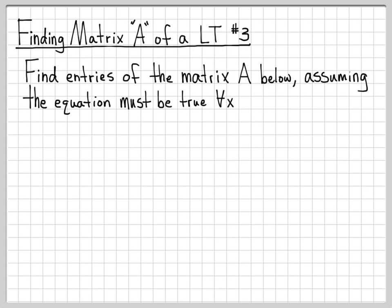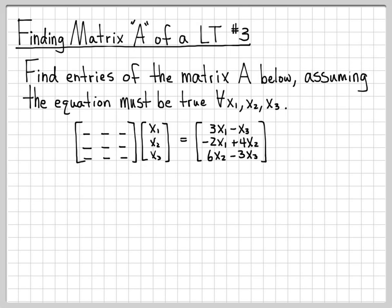What we're going to assume is that we've got some matrix that has all these entries that we don't know what they are, and we know that when operating on the vector x, which has three elements x1, x2, and x3, that gives us the following vector. The vector has a first element of 3x1 minus x3, the second element of the vector is minus 2x1 plus 4x2, and then the final element of the vector is 6x2 minus 3x3.